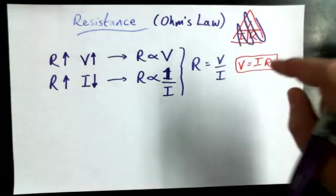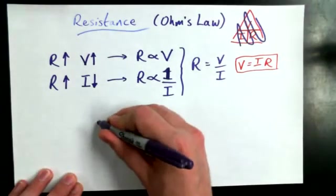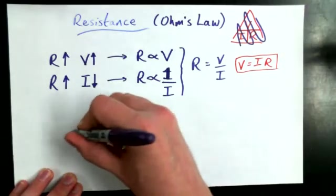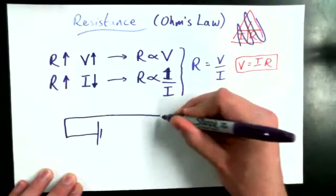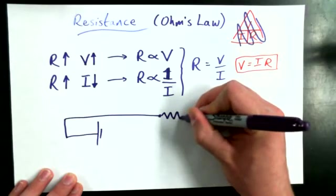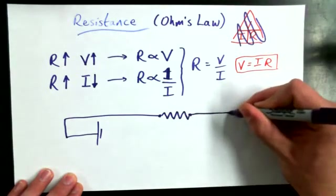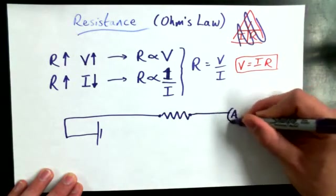In any case, V equals IR. Not a big deal. What do you think would happen? And I'm going to draw a resistor this time. I'm going to forget about light bulbs for a minute. Nice, simple resistor. I'm going to draw an ammeter in this circuit as well.